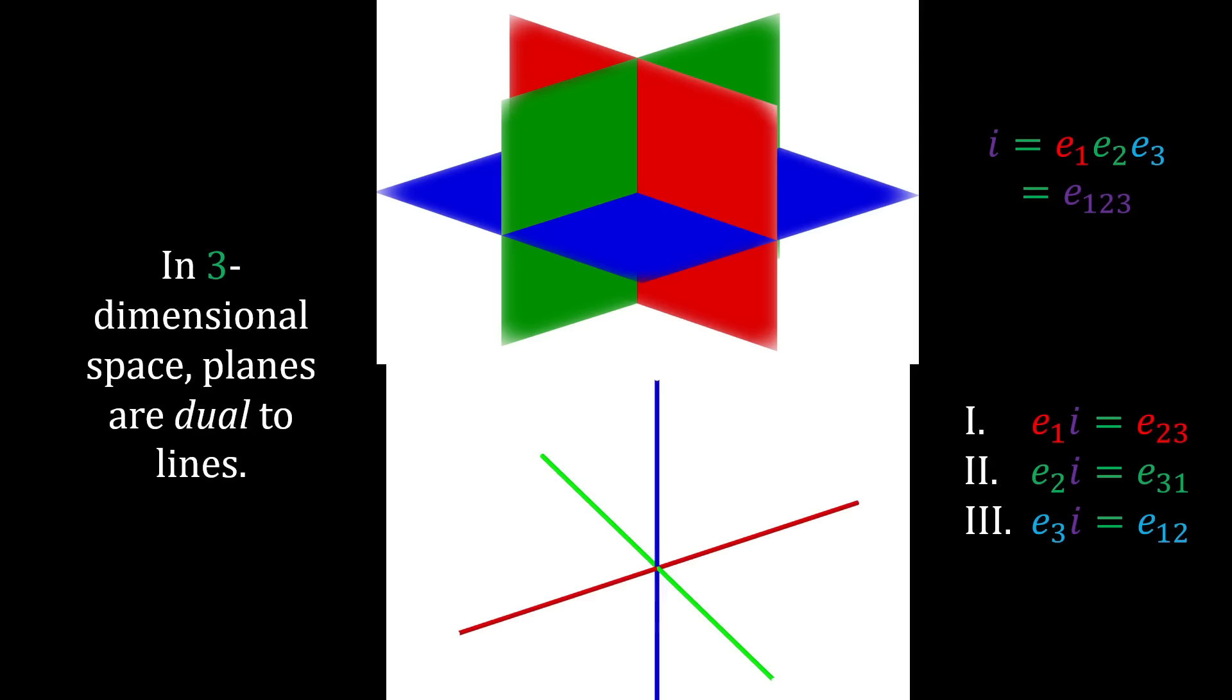This illustrates a geometric and mathematical duality in three-dimensional space. Actually, in any dimensional space there is a duality akin to the one on screen, so it's not unique to three dimensions. The images here demonstrate the geometric duality, and the math to the right demonstrates the mathematical duality. For those unfamiliar with geometric algebra, the product between e1, e2, and e3 is identical to the imaginary number i, and it is traditional to denote it i.